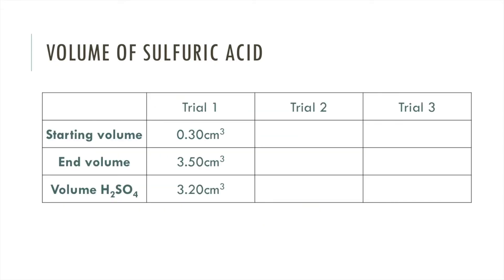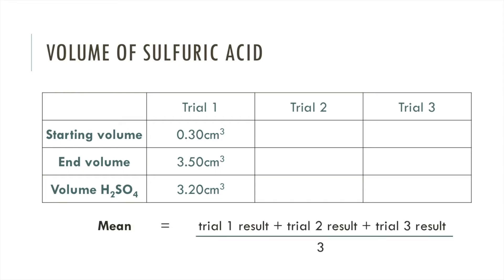What you would do next is repeat that titration two more times so you have three different values for the volume of sulfuric acid required to neutralize the sodium hydroxide. You would then find the mean of those values by adding up the three results and dividing by three. That mean would be the volume required to neutralize the sodium hydroxide.